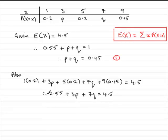So what you've got to do now is subtract 2.55 from both sides and that will leave you with 3P plus 7Q equals 4.5, take away 2.55 and that's 1.95.